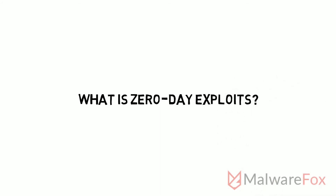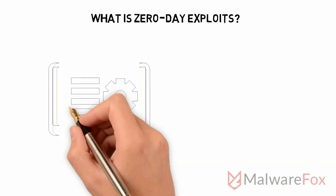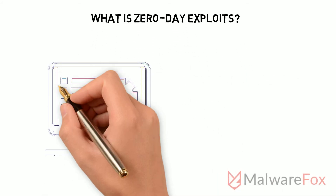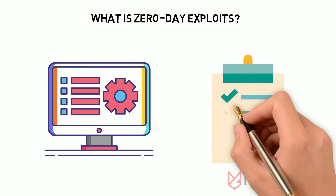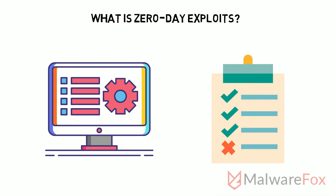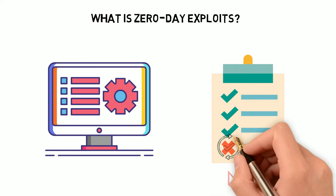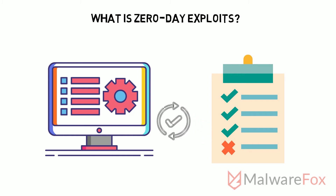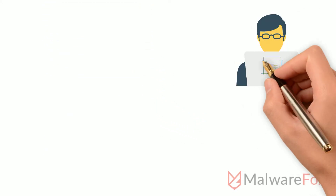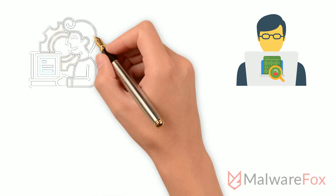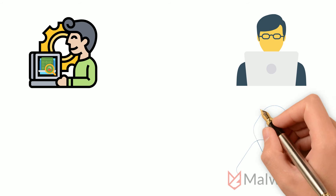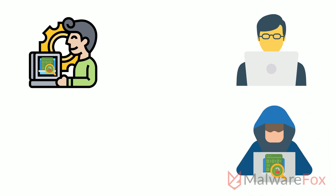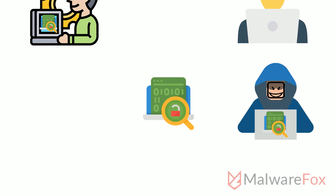What is zero day exploits? Software is released for users after several testing phases, however it is never perfect. There are always unforeseen flaws. To resolve these issues the developer subsequently releases updates. The problem could be reported by the user or discovered by self-testing. However when this vulnerability is discovered by criminally inclined people it can be exploited for nefarious purposes.